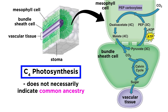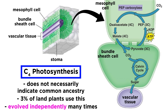It's important to note that the utilization of C4 carbon fixation does not indicate common ancestry. About three percent of land plants use C4 carbon fixation, most of which are monocots. However, C4 carbon fixation has evolved independently at least twenty times in the grass family alone, and is thus an excellent example of convergent evolution.